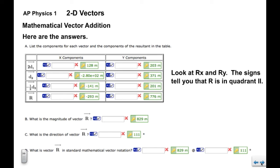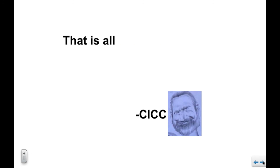All right, so again make sure that you look at rx and ry. The signs tell you which quadrant it's in. Left and up is in quadrant two. All right, that will do it for mathematical vector addition, and see you next time.